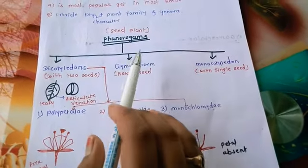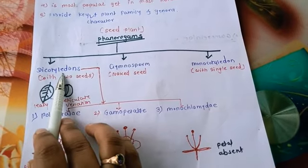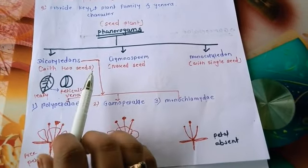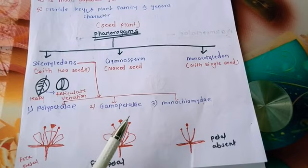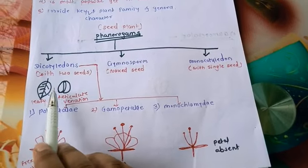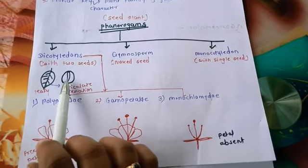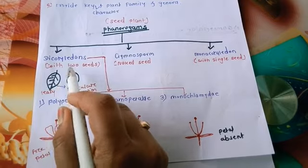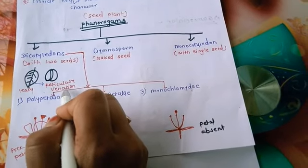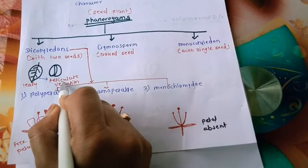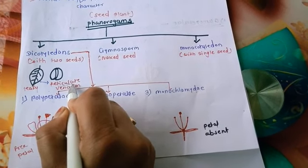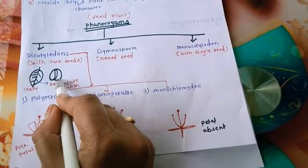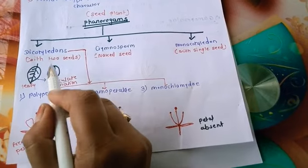There are three types of Phanerogams: dicotyledons, gymnosperms, and monocotyledons. Dicotyledon means plants with two cotyledons, or two seeds. In dicotyledons, the venation of leaves is reticulate venation.